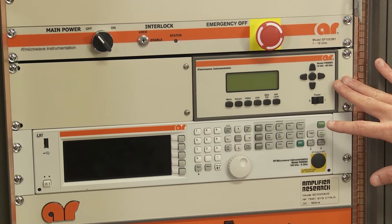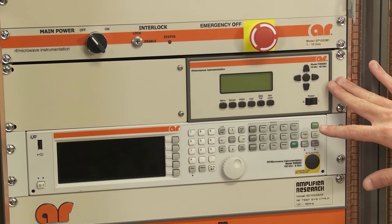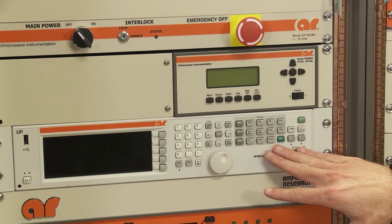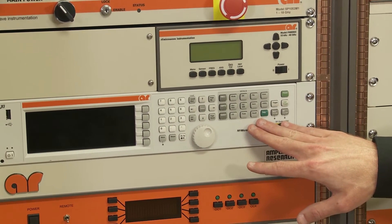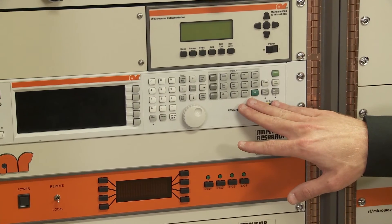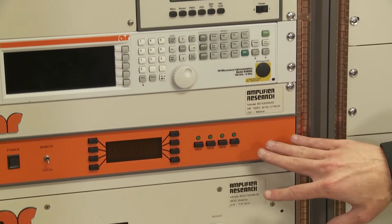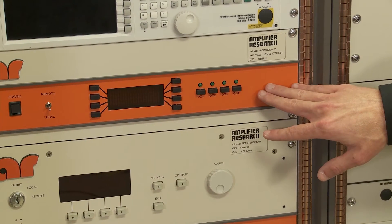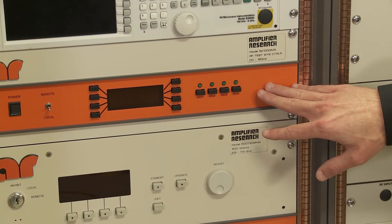Next we have a power meter for measuring all forward and reflected power from each of the amplifiers. We have a signal generator for providing all signals CW and modulated to all the amplifiers. We have a system controller for routing all RF from signal generation to power measurement and output of the amplifiers.